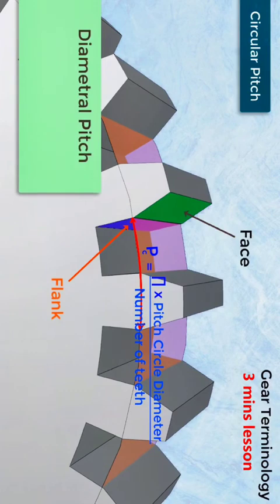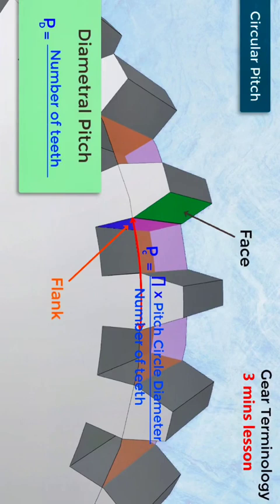Diametral pitch. It is denoted by P suffix D and given by: PD = number of teeth / pitch circle diameter.